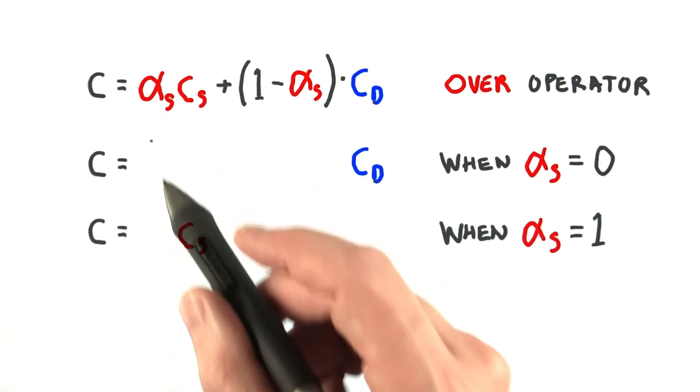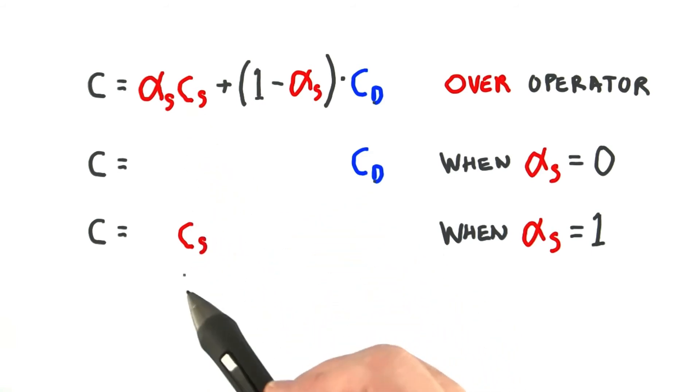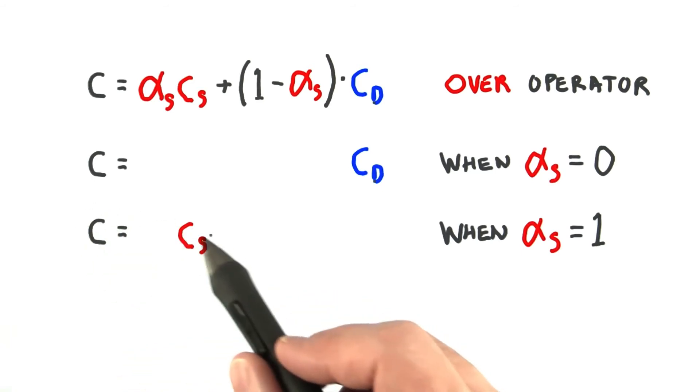If the value of alpha is 1, the source is fully opaque and hides whatever it's being placed over. The equation simplifies as expected, with the final color being the same as the source color.